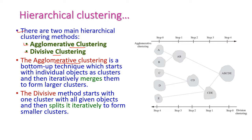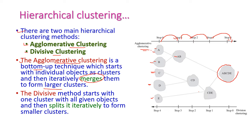Agglomerative is a bottom-up technique. It starts with all individual data items taken initially, and for every iteration it merges the data items, finally constructing a large cluster. In step 1, all data items are individually present; in step 2, two items are merged together. Every iteration the data items are merged until we get one complete full cluster.